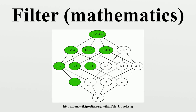An alternative to the similar notion of a net, developed in 1922 by E. H. Moore and H. L. Smith. Intuitively, a filter on a partially ordered set contains those elements that are large enough to satisfy some criterion.